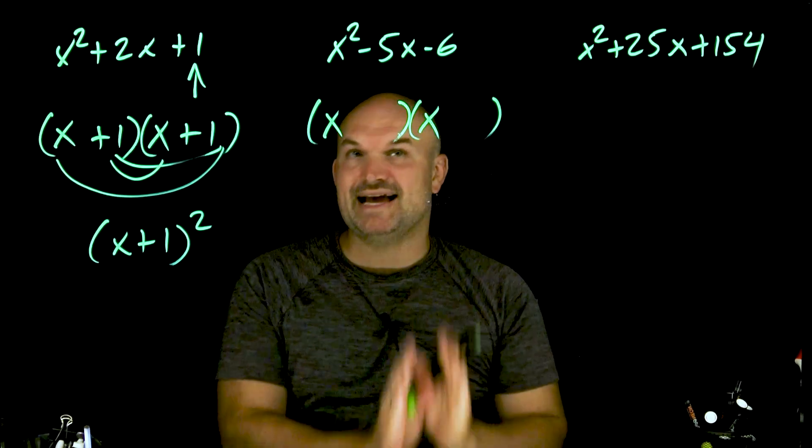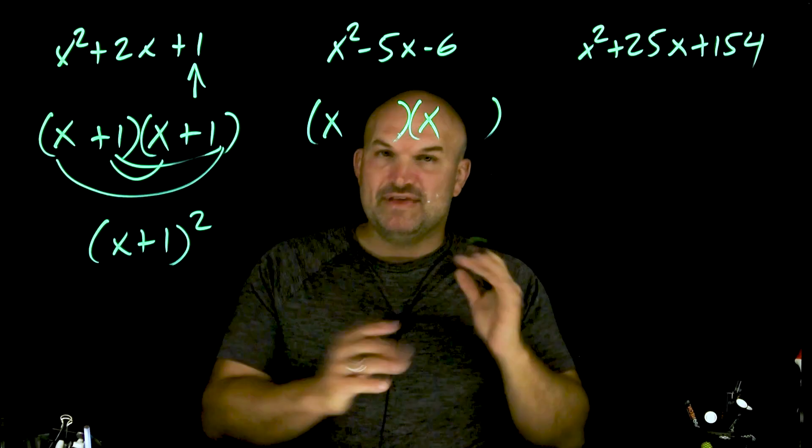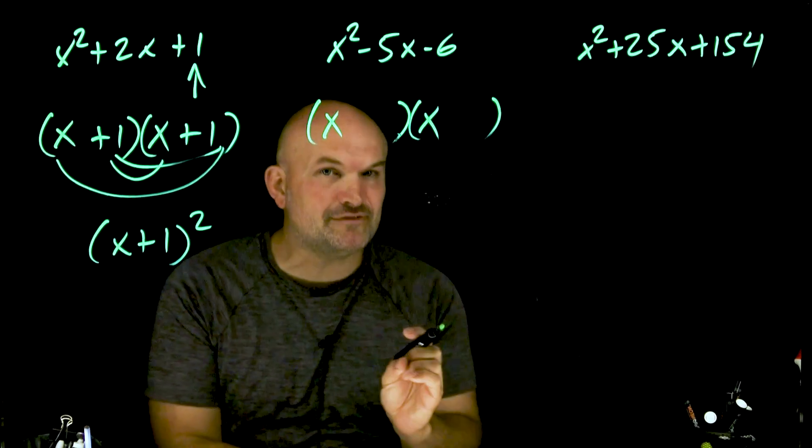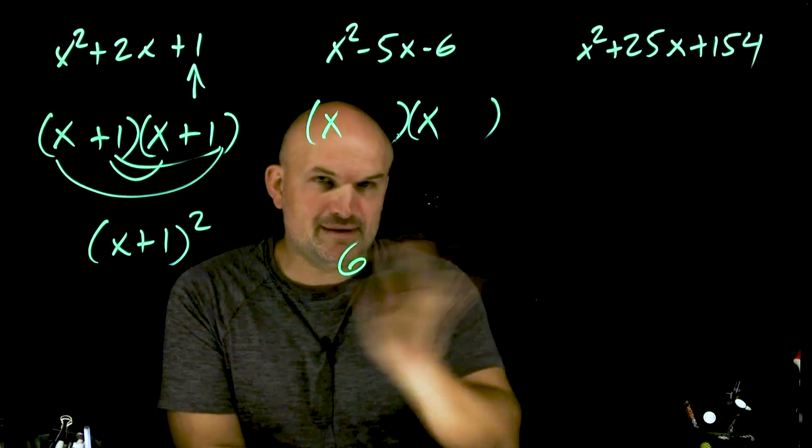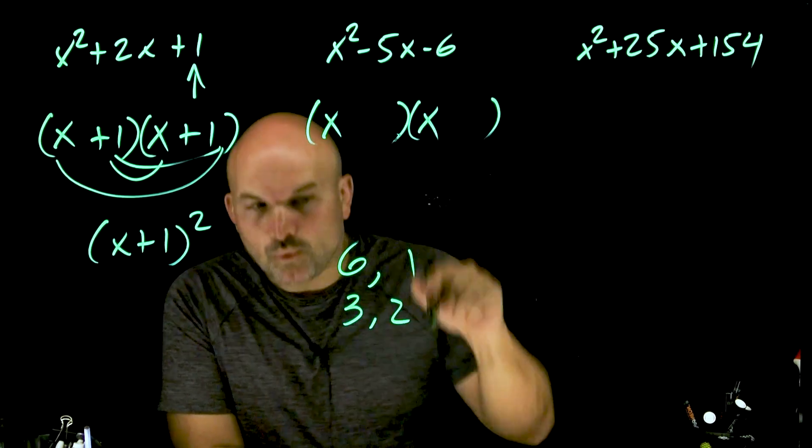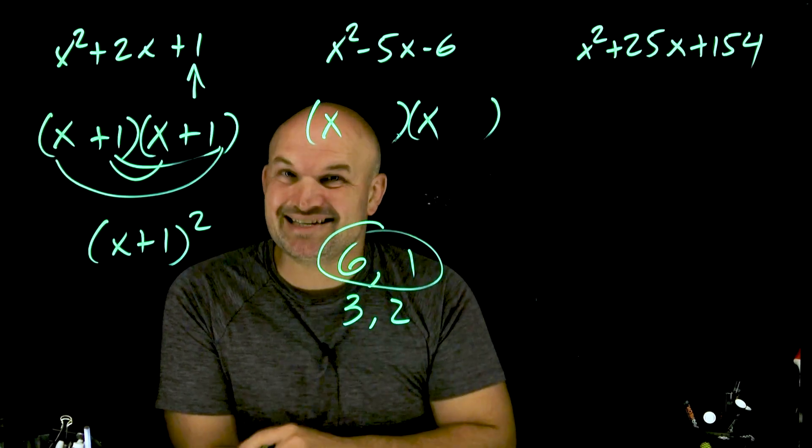Now we need to consider this middle term. Notice the middle term is going to be negative. What I usually tell my students is when our last term is negative, think about this term as like the difference. So what two factors have a difference of negative 5? Forget about the positives and negatives for a second. We have 6 and 1, and we have 3 and 2. Which of these factors have a difference of 5? Well, obviously that's 6 and 1.